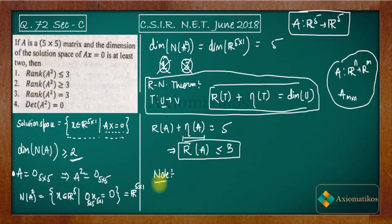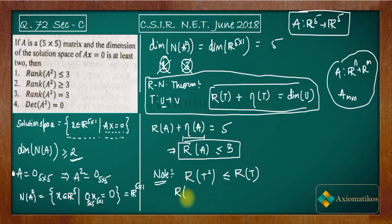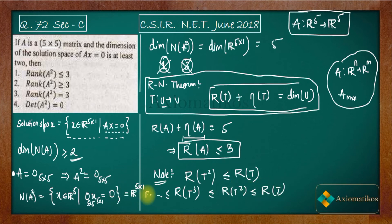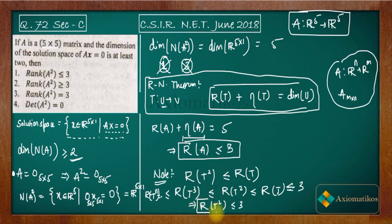An important note: for any transformation T, rank(T²) ≤ rank(T), and similarly rank(Tⁿ) ≤ rank(T) for any power n. When you increase the power of a transformation, the dimension of its range space decreases. Since rank(A) ≤ 3, it follows that rank(A²) ≤ rank(A) ≤ 3, so rank(A²) ≤ 3.